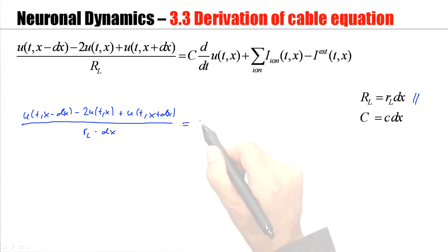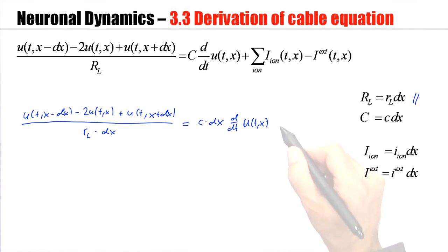Similarly, the big C becomes the small c times dx and I have d/dt of u(t,x) and the big ion current becomes the small ion current.